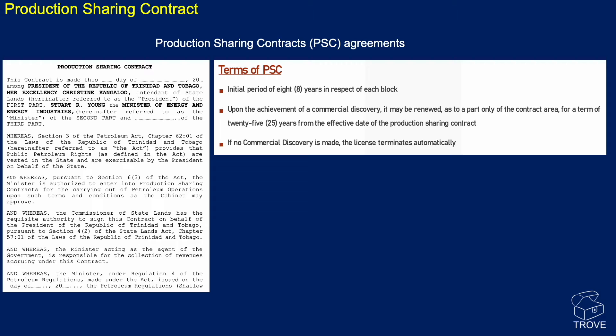The production sharing contract terms: there's an initial eight-year period for each of the blocks within the production sharing contract — an initial period which is compulsory — and then two optional periods during that eight years. Upon the achievement of a commercial discovery, the license can be renewed for a small area pertaining to the field, for a period of up to 25 years from the effective date of the production sharing contract — sufficient time to develop, produce and decommission the field. If no commercial discovery is made, the license terminates automatically.